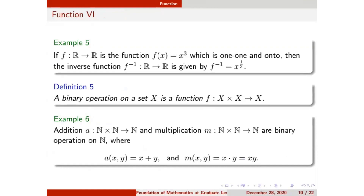Now we come to the next example: f is defined from the real numbers to the real numbers and is the cube function. Taking a subset like the natural numbers, f(1)=1, f(2)=8, and f(3)=27. We can show this function is one-to-one because distinct elements give distinct cubes.